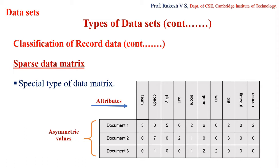A sparse data matrix can also be considered as transaction data. For example, in a document-word matrix, the attributes are words present across three documents and the values represent the frequency of appearance of each word. A zero means that a particular word — say 'coach' — is not present in that document. This is the sparse data matrix, completing the three variations of record data.